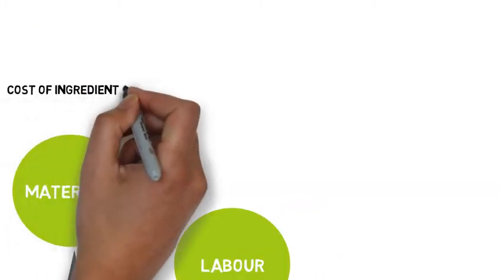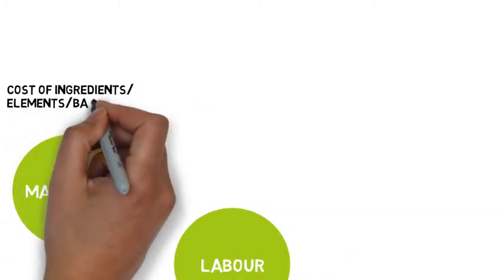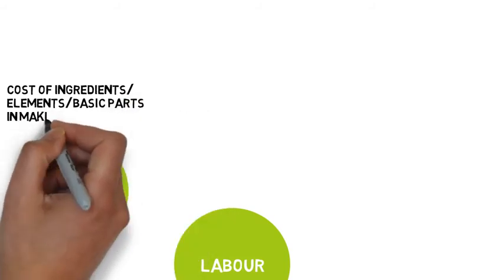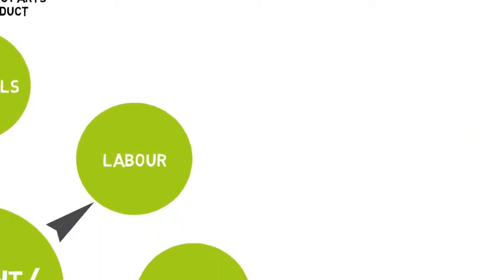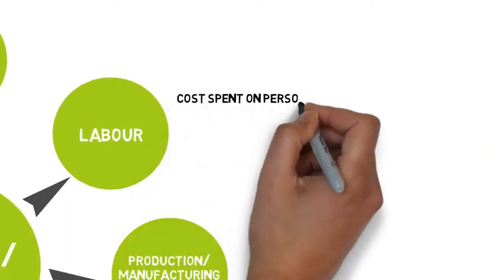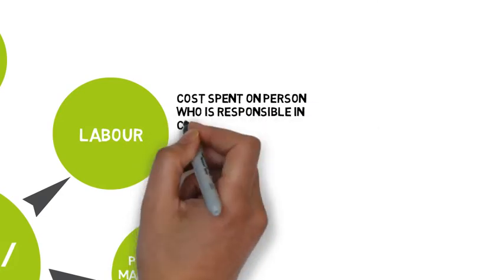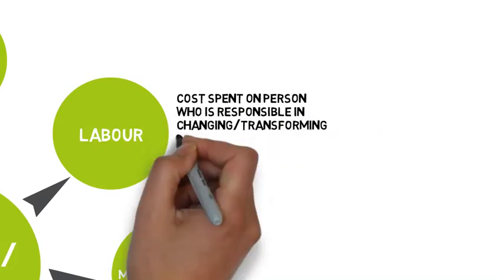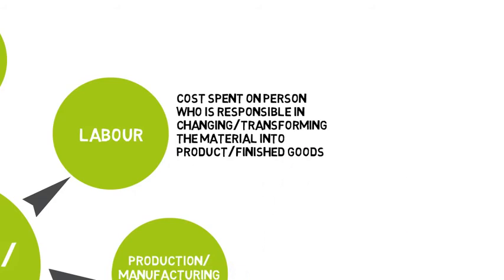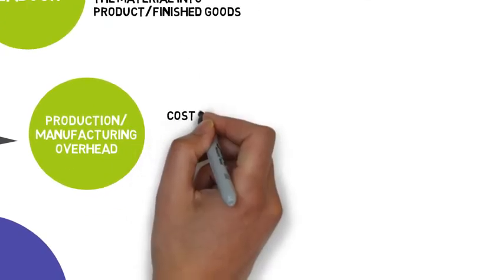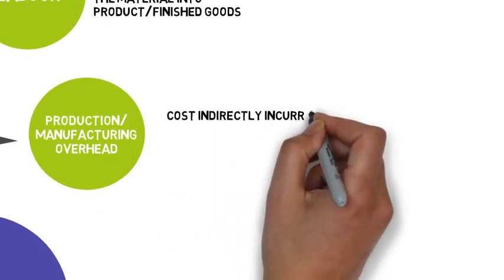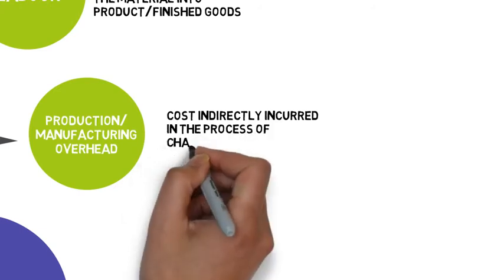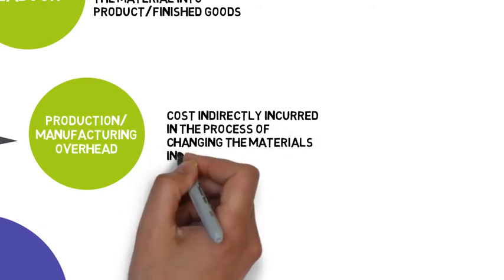What is materials? Material can be defined as cost of ingredients or elements or basic parts in making a product. Cost spent on person who is responsible in changing or transforming the material into product or finished goods is definition for labor.